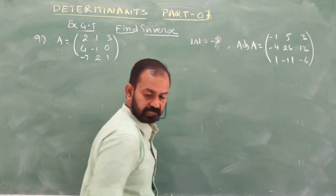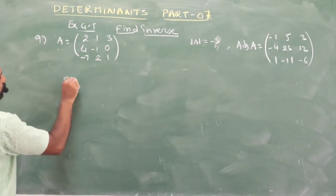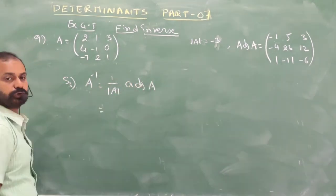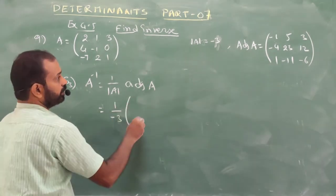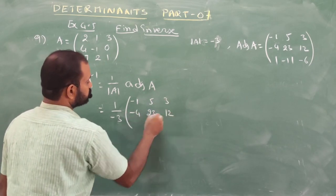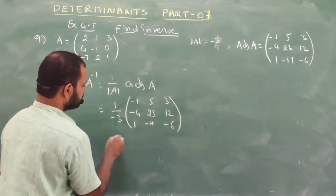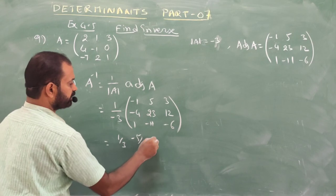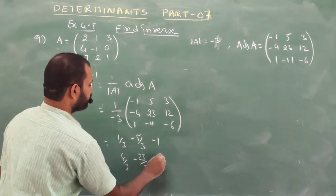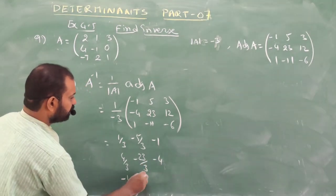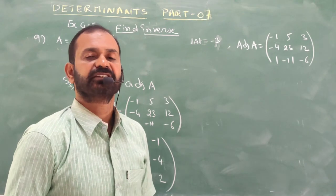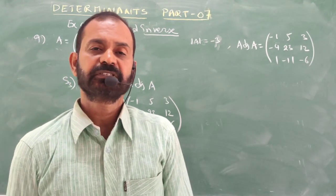Continuing cofactors: A23 = (-1)^5 × det[2, 1; -7, 2] = -(4+7) = -11. A31 = (-1)^4 × det[1, 3; -1, 0] = 0+3 = 3. A32 = (-1)^5 × det[2, 3; 4, 0] = -(0-12) = 12. A33 = (-1)^6 × det[2, 1; 4, -1] = -2-4 = -6. Therefore A inverse = (1/-3) × adjoint A = [-1/3, 5/3, -1; 4/3, -23/3, -4; -1/3, 11/3, 2]. Thank you — the rest of the problems will be covered in the next session.